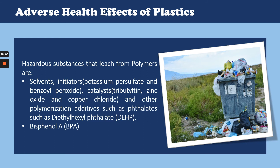Phthalates — DEHP, DBP, DIBP and BBP — are chemicals added to plastics to increase their flexibility, transparency and durability. They are all toxic and interfere with the human hormonal system. DEHP is banned in most countries. Because additives are not usually chemically bonded to the plastic structure, they are able to leach out from the polymer matrix more easily, further facilitated by their low molecular weight. Since additives can form a large proportion of the plastic mass, their leaching may form a substantial amount of all the chemical substances that leach out of the plastic material.